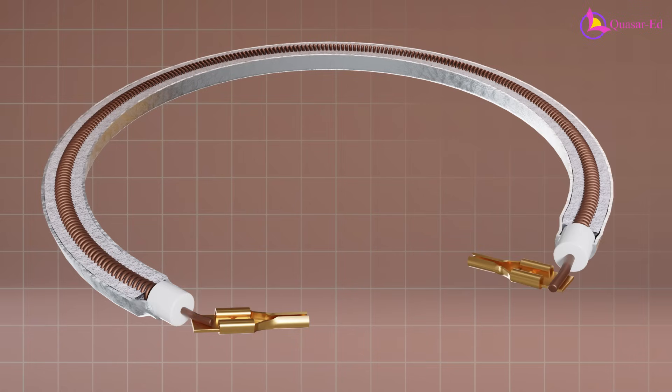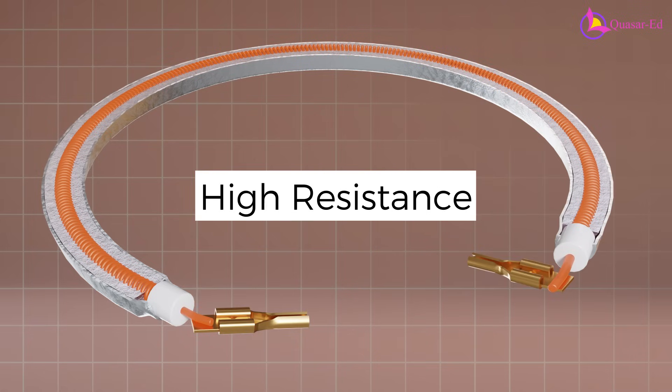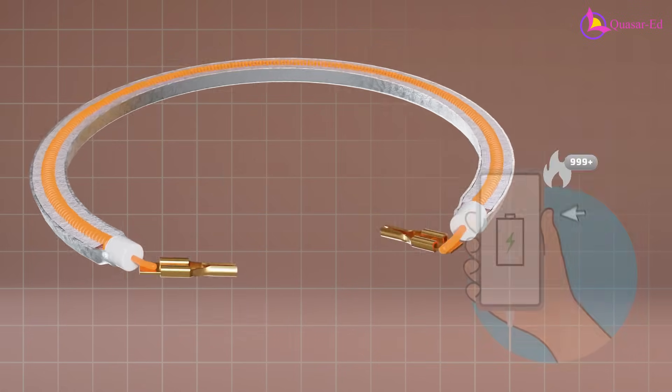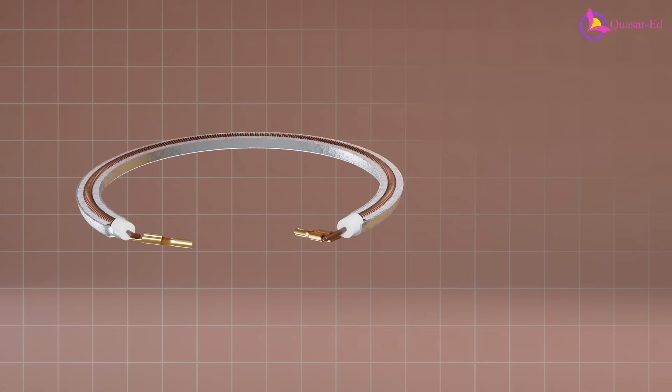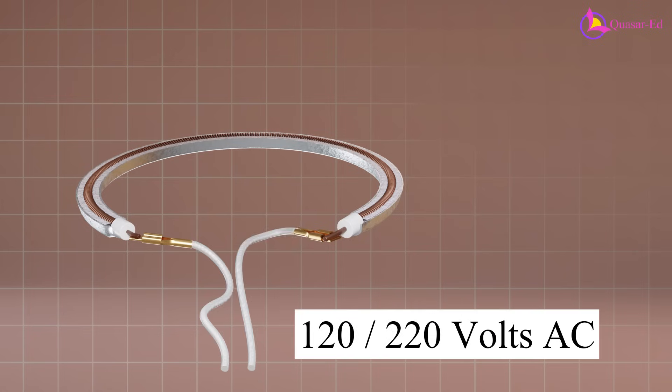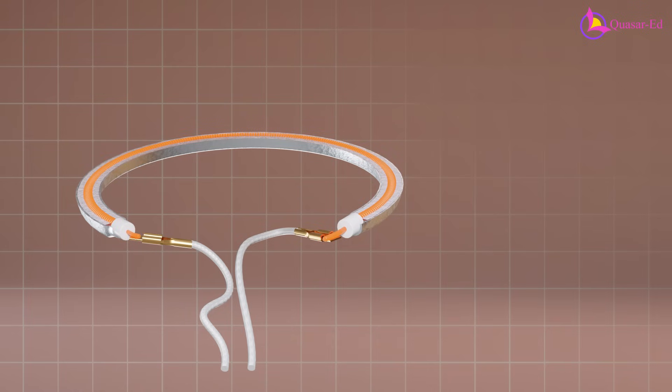The nichrome wire generates heat due to its high resistance to electric current. This is similar to how your phone gets hot, but the nichrome wire in the kettle has much higher resistance. When connected to a 120 or 220 volt outlet, it gets extremely hot and glows red.